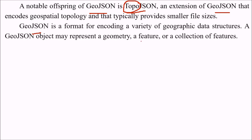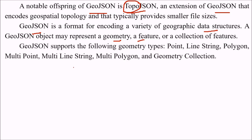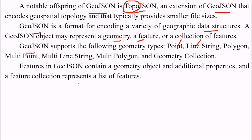GeoJSON is a format for encoding a variety of geographic data structures. GeoJSON objects may represent a geometry, a feature, or a collection of features. GeoJSON supports various geometry types like point, line, polygon, multi-point, multi-line string, multi-polygon, and geometry collection.